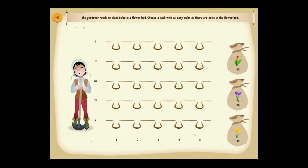The gardener needs to plant bulbs in a flower bed. Choose a sack with as many bulbs as there are holes in the flower bed.